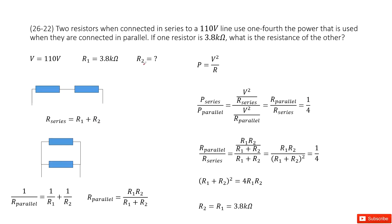We are asked to find R2. For this question, we can consider the given quantity, which is about the power ratio. So we can write the power equation: P equals V squared divided by R.